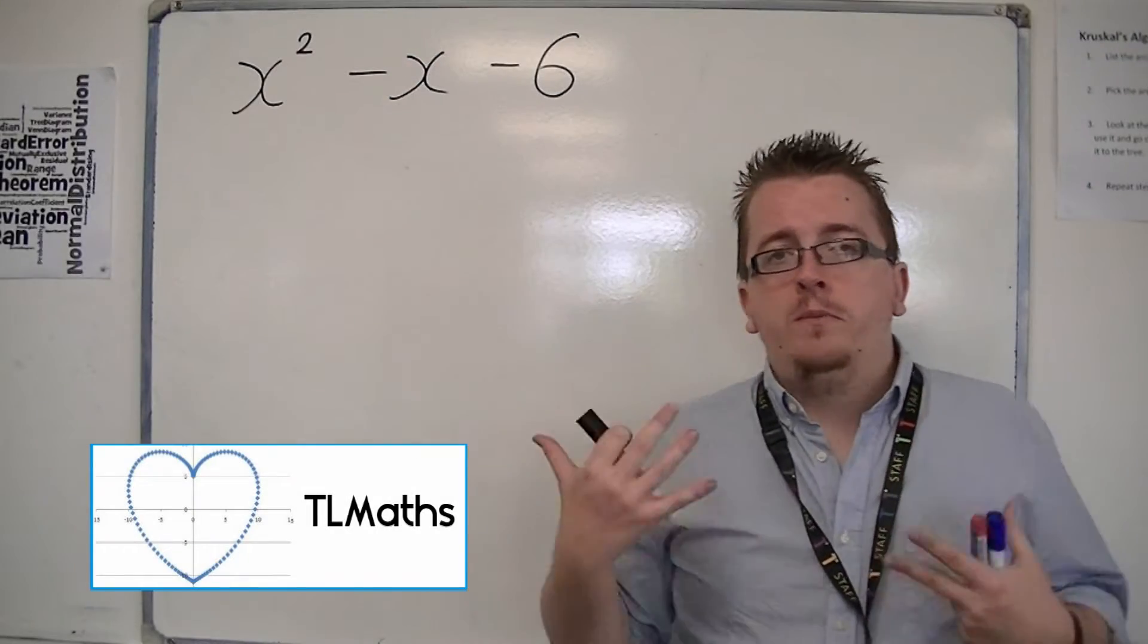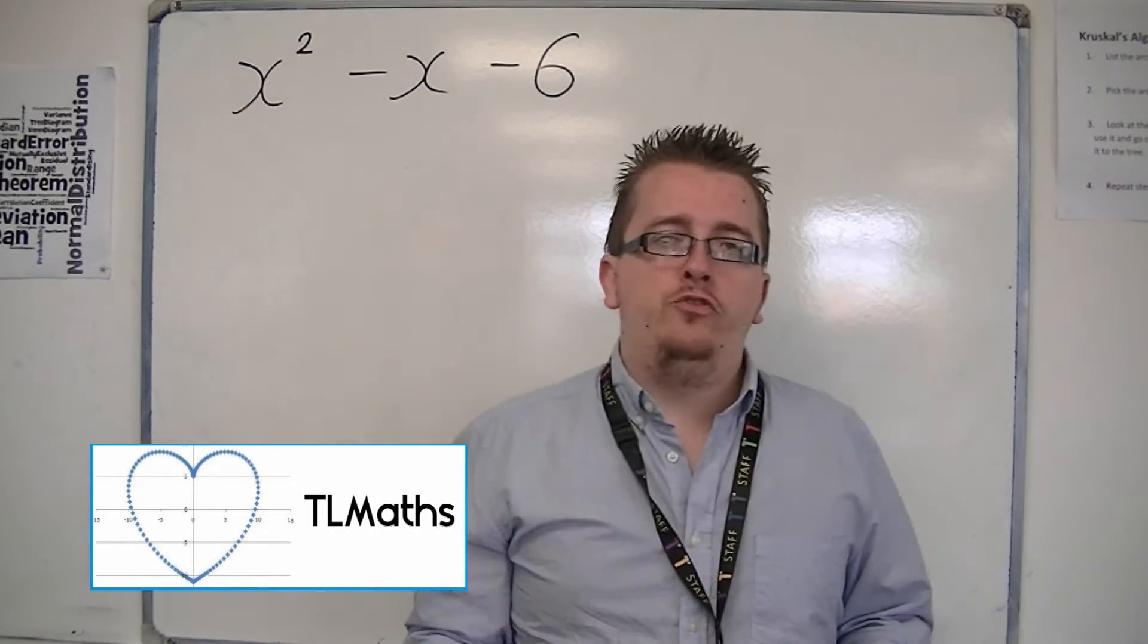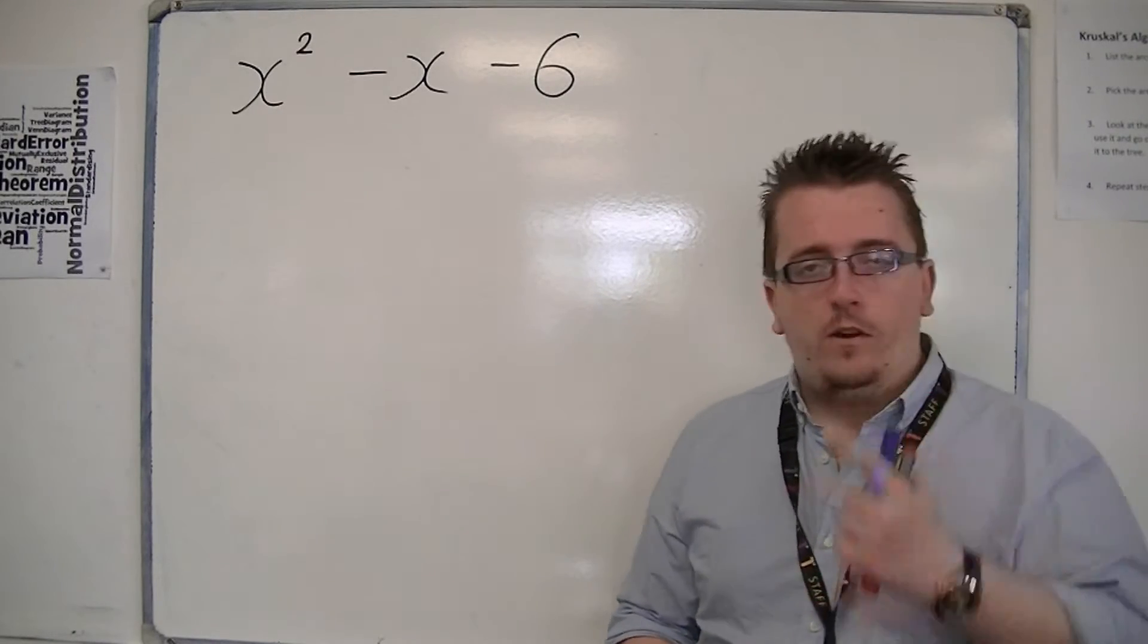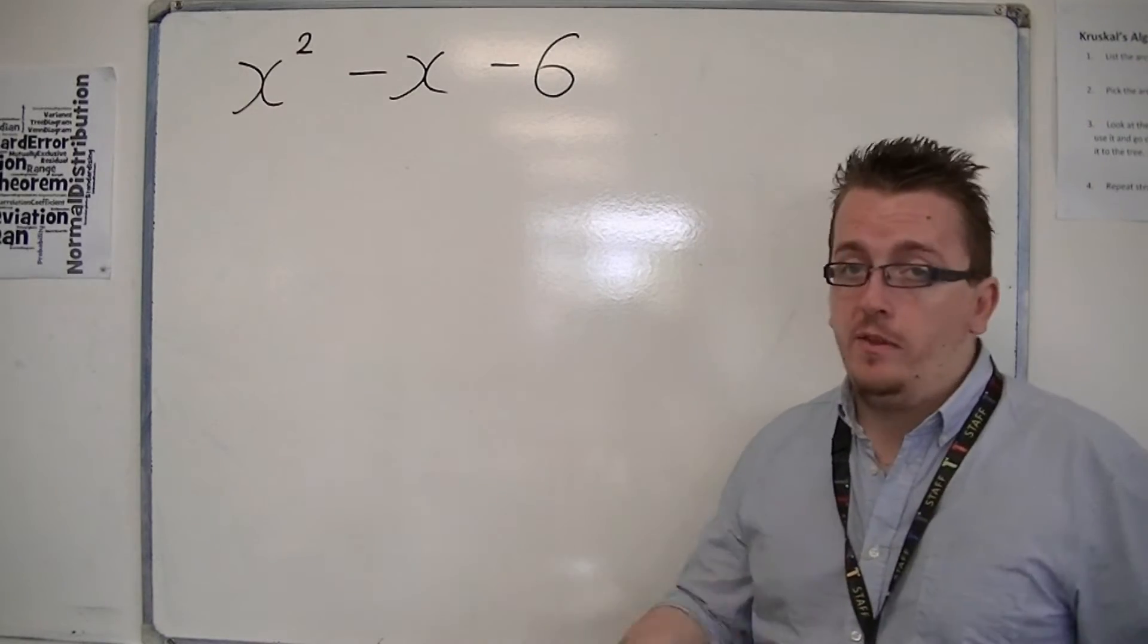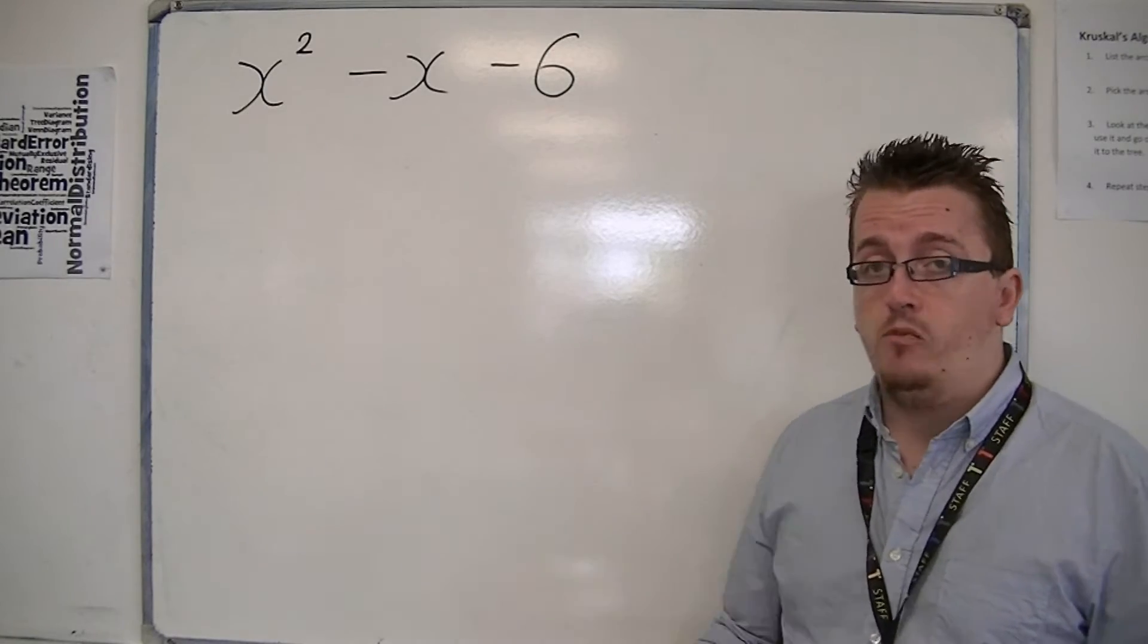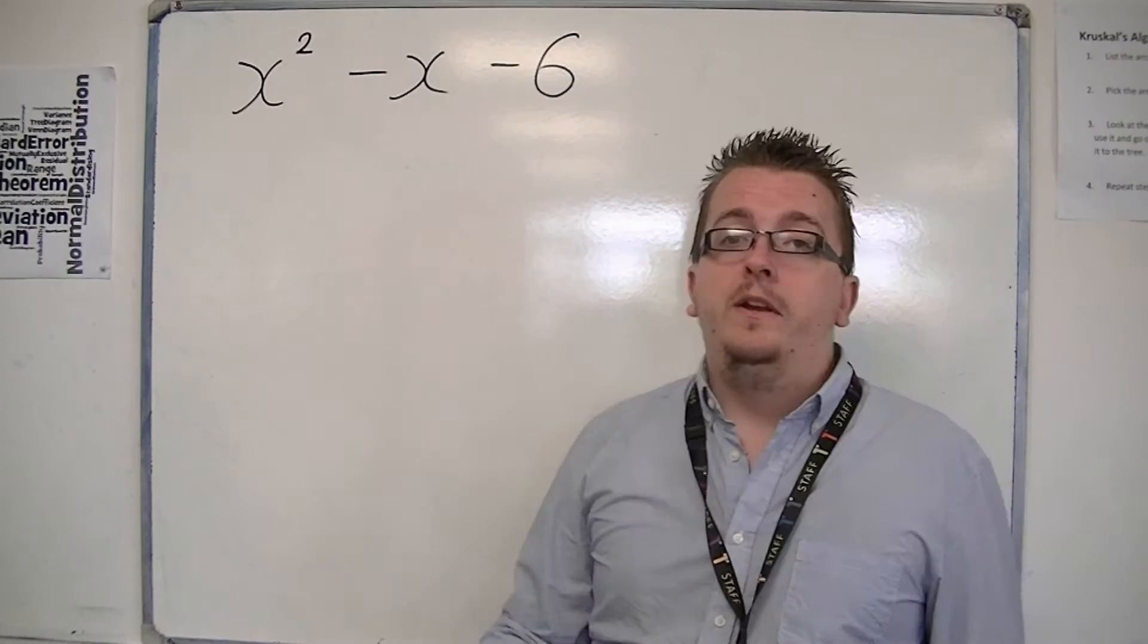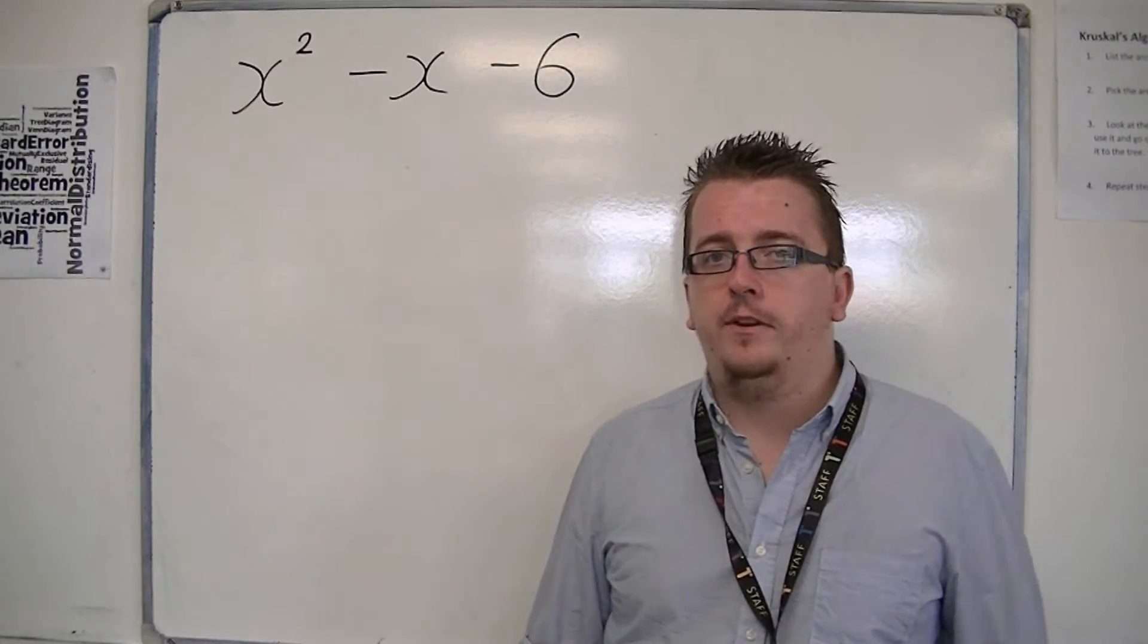So, now we're moving on to factorising a quadratic into double brackets. The way to spot, as I said in the previous video, how this would be double brackets rather than single brackets, is the fact that we have this constant term, this minus 6 on the end.